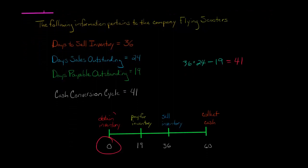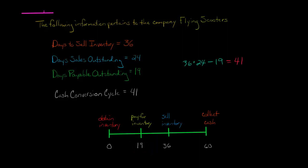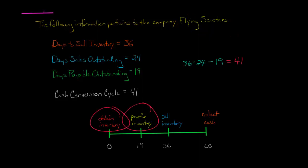Let me draw out a timeline. At day zero, the company obtains its inventory — they buy it on credit from their suppliers, the companies that actually manufacture the flying scooters. Then 19 days later — which we know because that's the days payable outstanding for this company — Flying Scooters pays cash for the inventory. So it bought the inventory on credit at day zero and pays cash for it 19 days later.